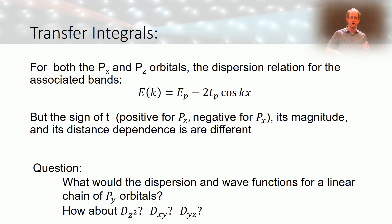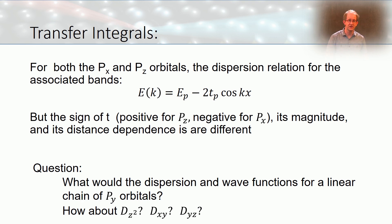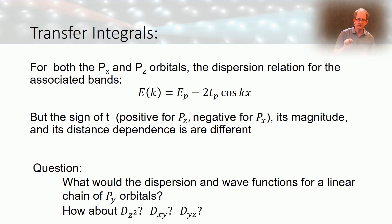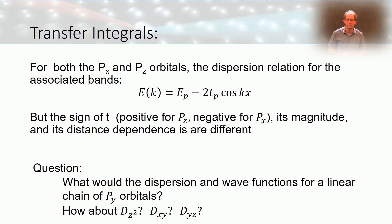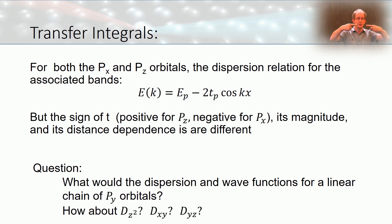For both px and pz orbitals the dispersion has the same mathematical form: E_p minus twice the transfer integral times cosine(k). But the sign of t changes. For pz orbitals, t is positive — the same shape as s orbitals. For px orbitals, t is negative, so we must increase crystal momentum to get a more bonding interaction. The magnitude will also differ. The pz orbitals overlap less than px orbitals, which point directly at each other — giving pi bonds for pz and sigma bonds for px.